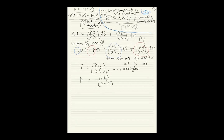In thermodynamics, T = (∂U/∂S)_V is the most fundamental definition of temperature. Previously we used temperature as a measure of kinetic energy, but this is actually more rigorous. You can show it's equivalent to common-sense definitions of temperature. Of course, if it gets warmer outside you don't tell your mom 'the partial derivative of internal energy with respect to entropy at constant volume is rising' — but it is the most accurate statement.